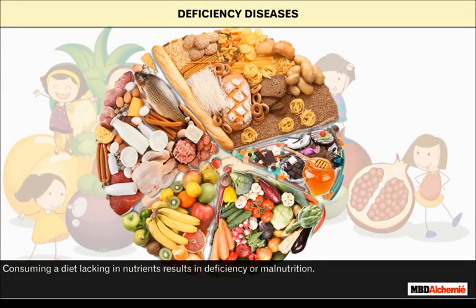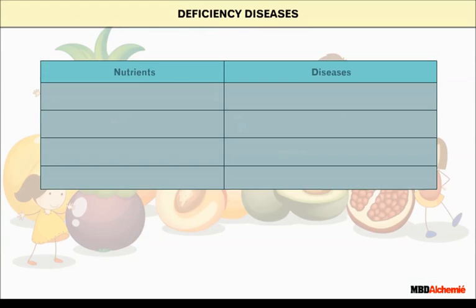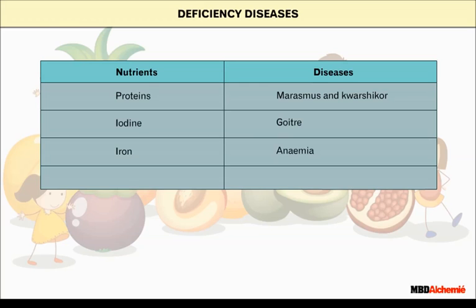Consuming a diet lacking in nutrients results in deficiency or malnutrition. Malnutrition occurs when a diet deficient in any one of the nutrients is consumed. Deficiency of proteins causes marasmus and kwashiorkor. Deficiency of iodine causes goiter. Deficiency of iron causes anemia. Deficiency of vitamins causes color blindness, anemia, pellagra, beriberi, scurvy, rickets and bleeding.